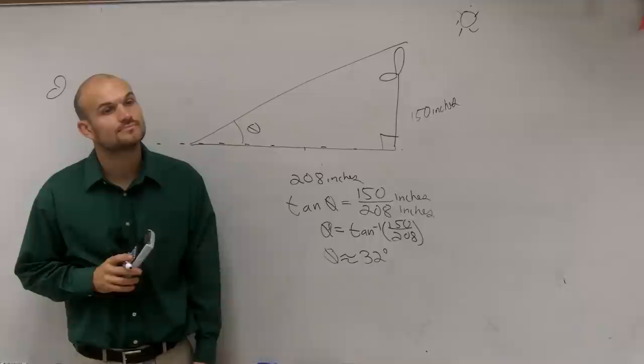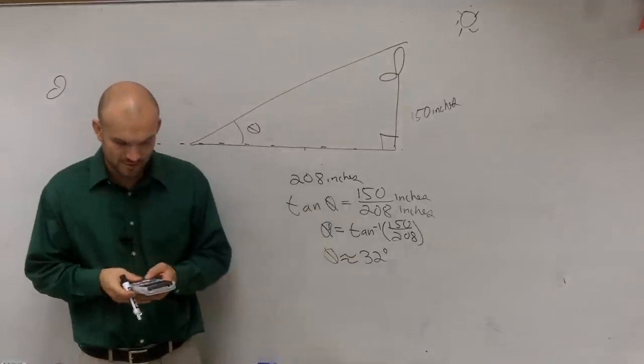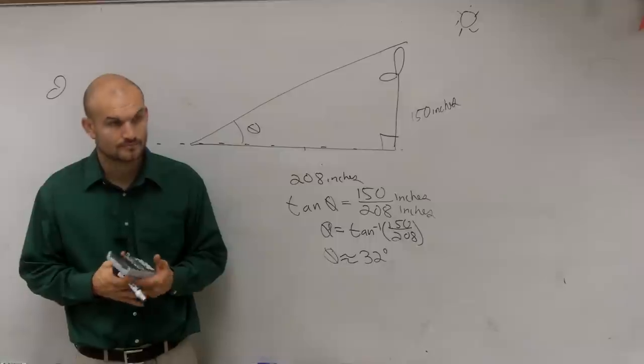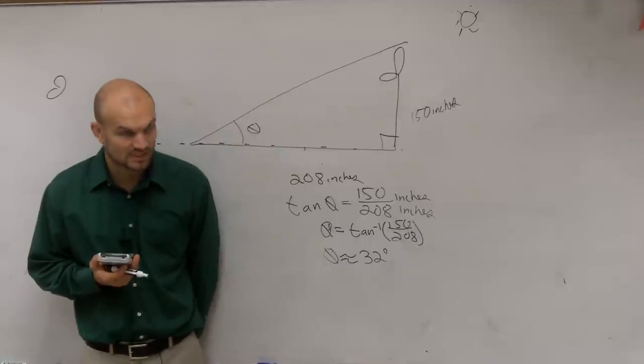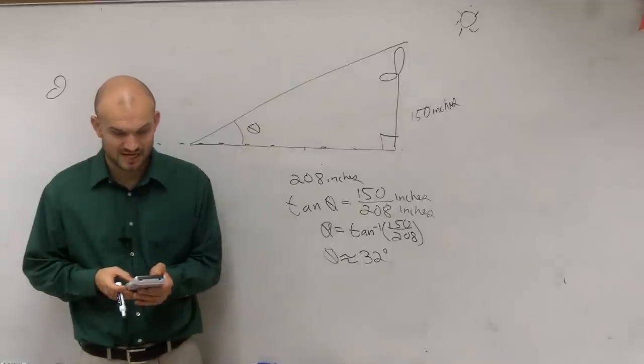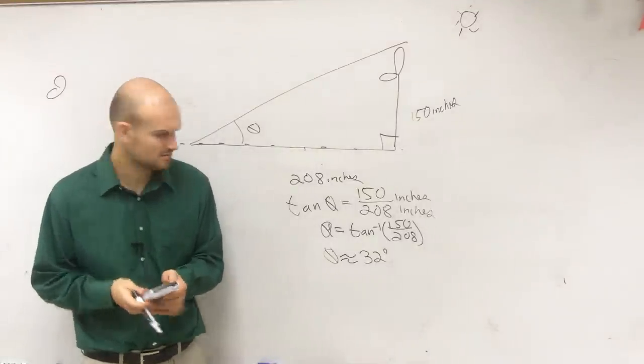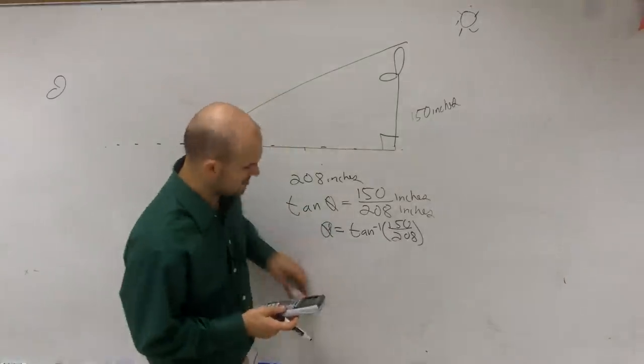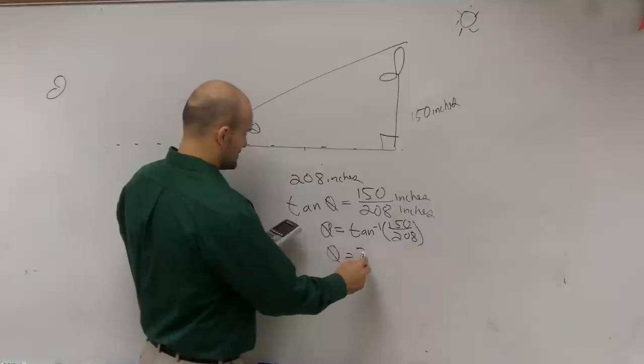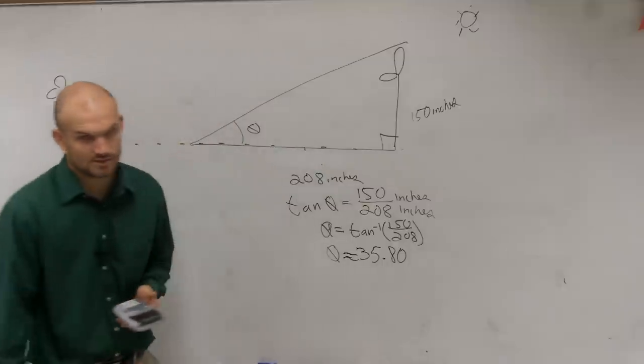Yeah, I got 35.8. What did you get for 150 divided by 208? Did you have 150 divided by 208? Yeah, I got .7211. Okay, .7211, right? And then you do inverse tangent of second answer. So inverse tangent. I still got 35.8. Yeah, I'm getting 35 too. I don't know what happened there. I might have typed in the wrong number again. So yes, you're right. Theta equals, let's do 35.80. And let's approximate that with the squiggly.